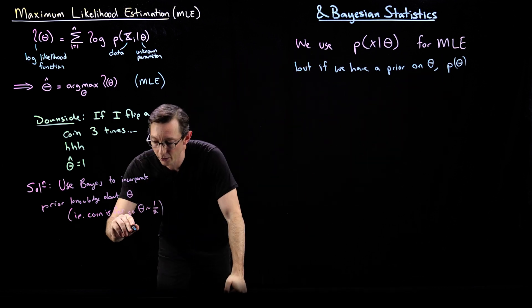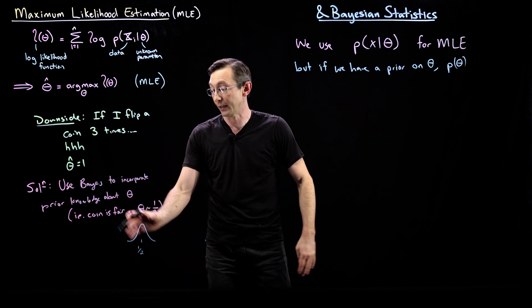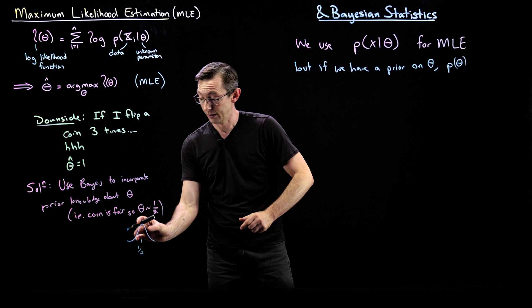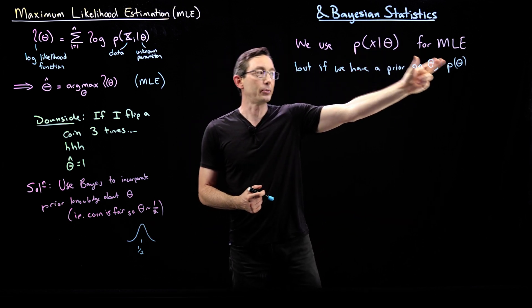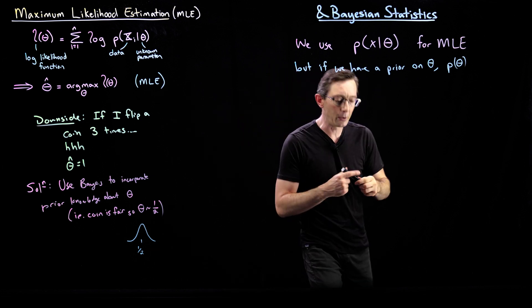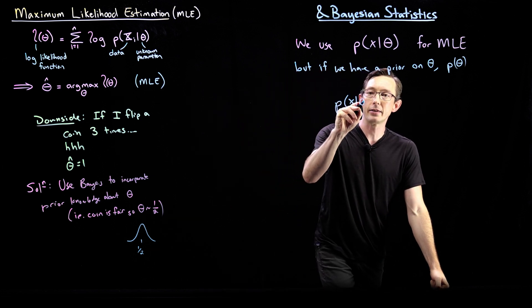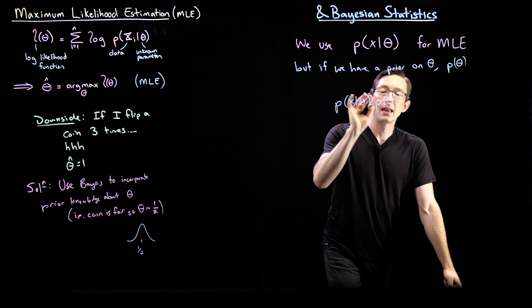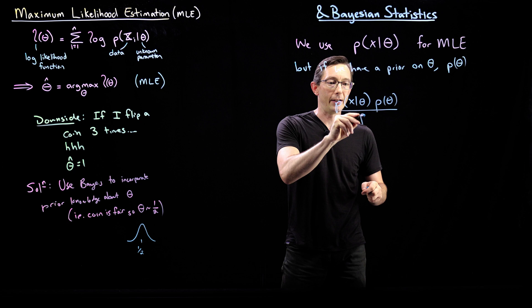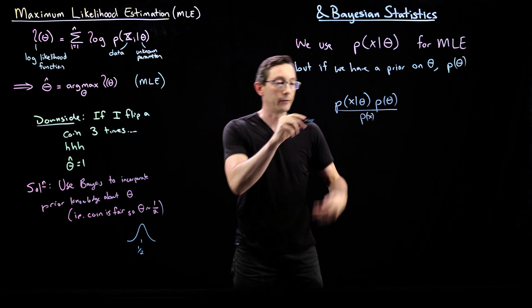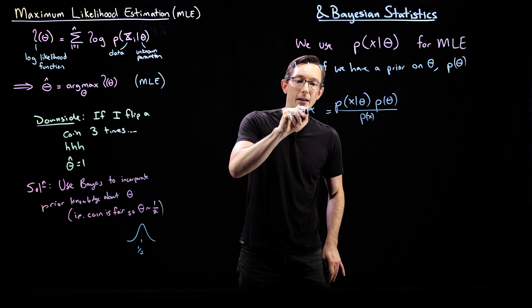This could literally be a normal distribution around one half. That would be a prior distribution on theta if I think it's a fair coin. Pretty tight prior. But if we have a prior on theta, we can multiply these two and we can get essentially P(x|θ) times P(θ). And this is going to equal, maybe I'll divide by P(x) just so it looks exactly like we're used to looking from Bayes' theorem. This is going to equal the probability of theta given X.